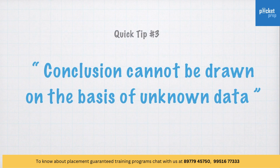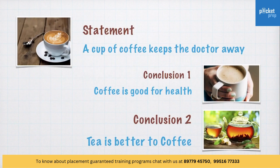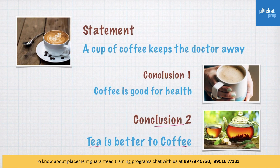The third quick tip: a conclusion cannot be drawn on the basis of unknown data. Look at conclusion two: 'Tea is better than coffee.' It may be true or it may not be — we are not sure, because there is no information given about tea in the statement. Therefore, this is not valid.